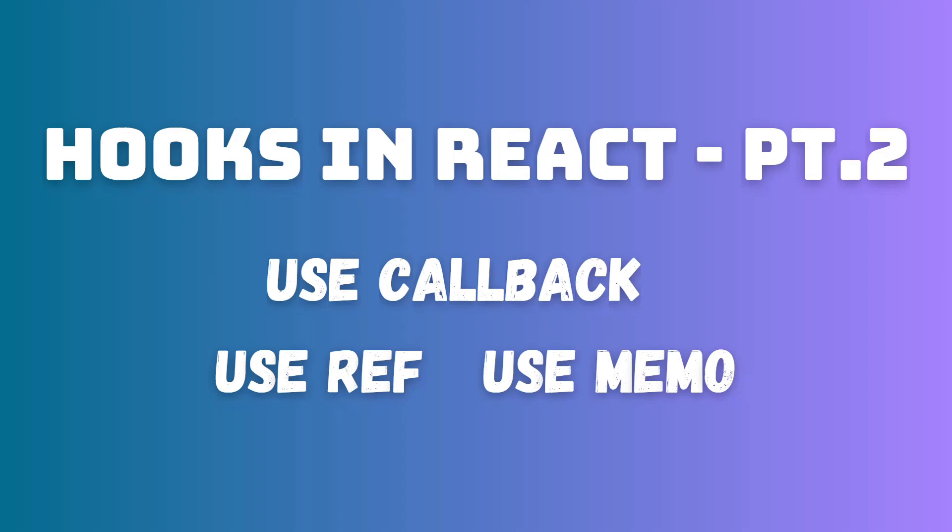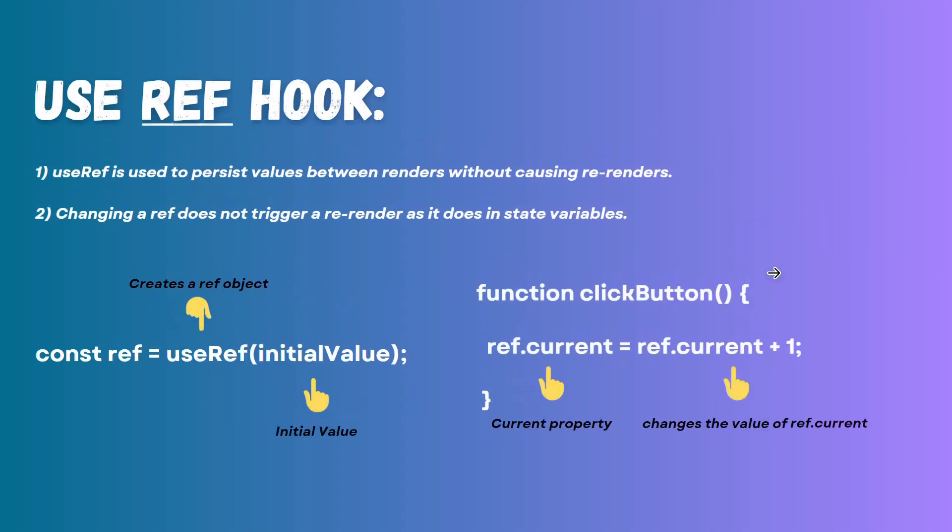Let's start with what is the useRef hook. useRef is used to persist values between renders without causing re-renders, making it perfect for tasks that involve DOM manipulation, storing mutable values, or tracking previous values. useRef returns an object called a ref object, which has a single property called current.